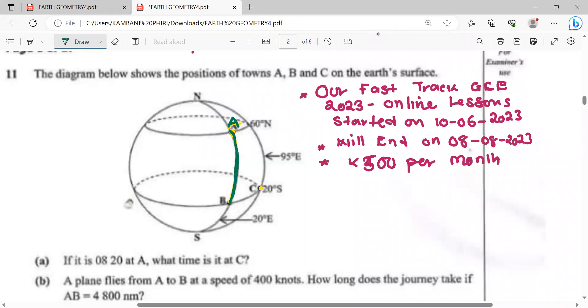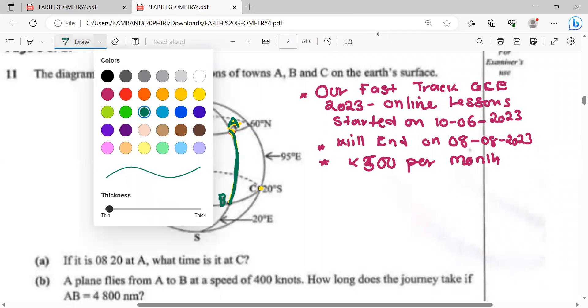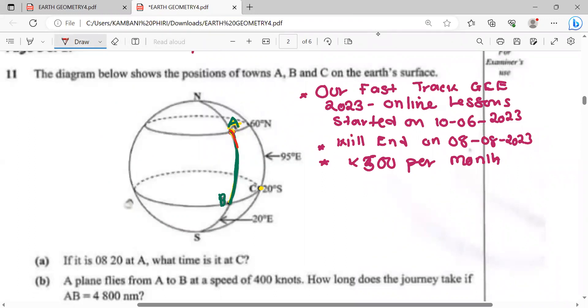This is the same longitude, so time should be the same. In short, if it is 0820 at A, it will be 0820 here at B. Now if it is 0820 at B, what time is it at C?